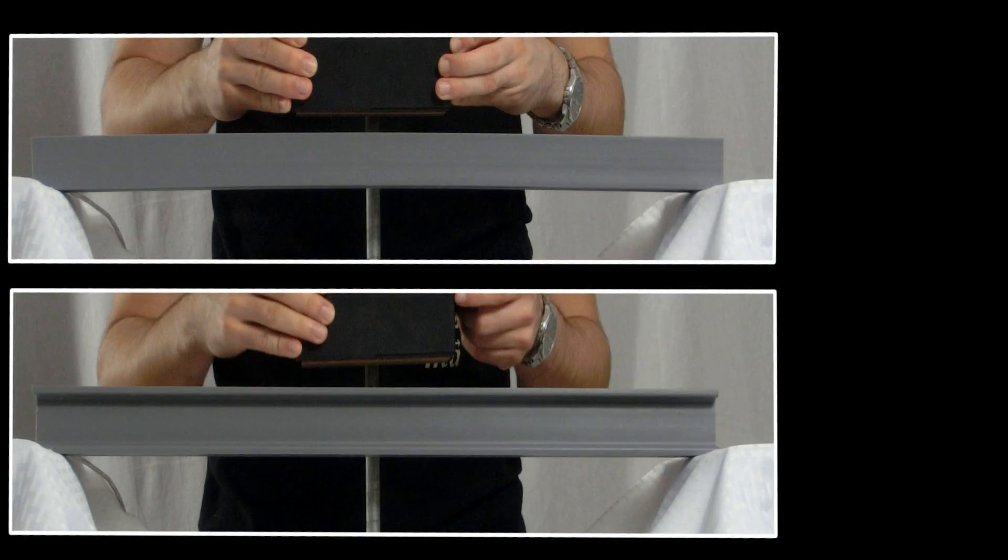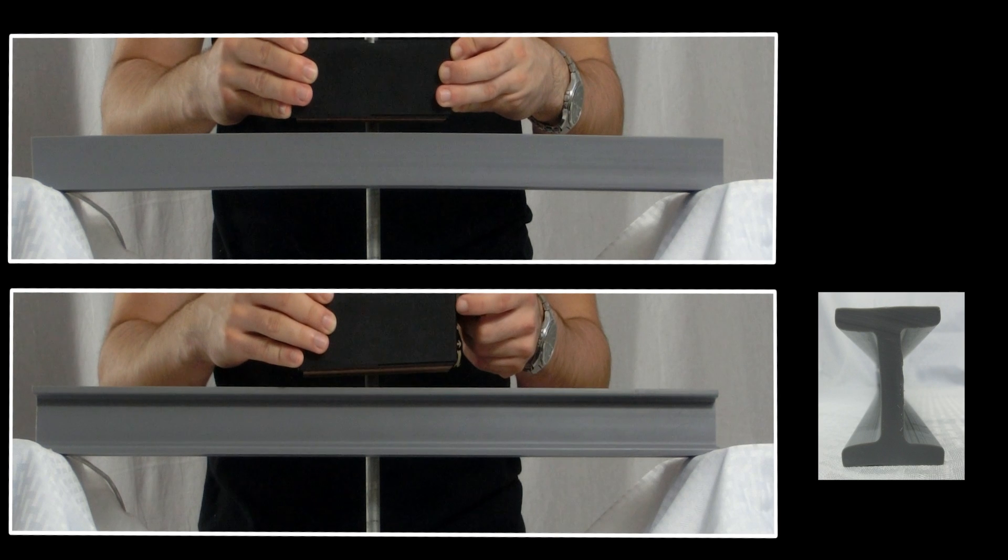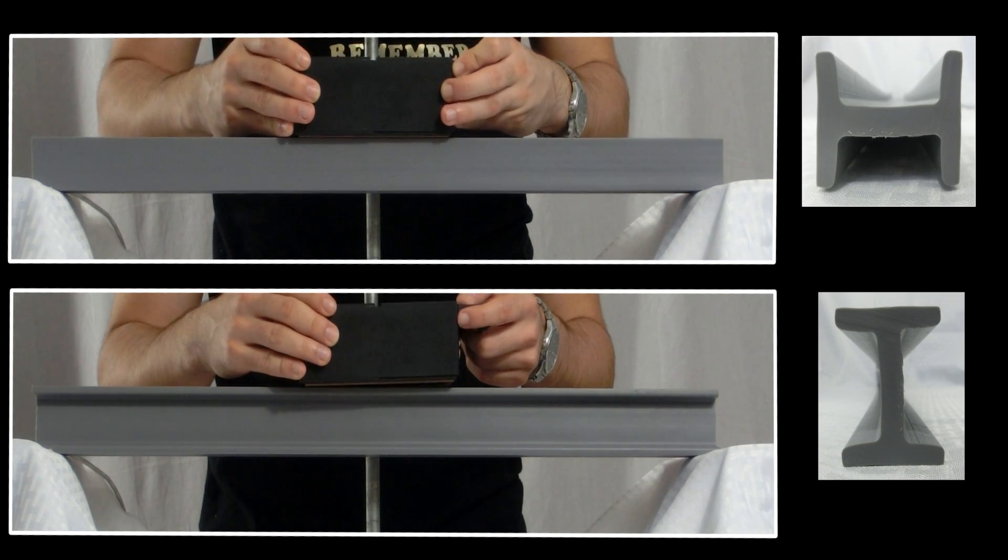In order to analyze this phenomenon better, we built two supports to hold the beam suspended in the air at either end. We then measured the deflection of the gray beam in both the I and the H-orientation by adding a fixed weight on the center.